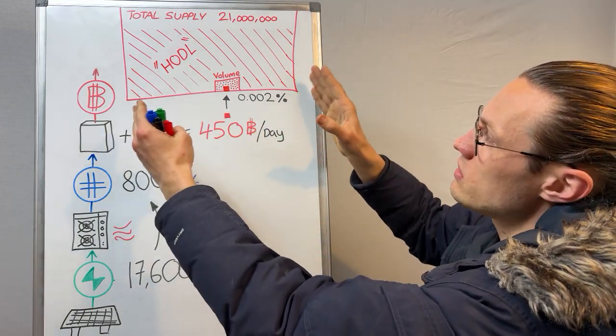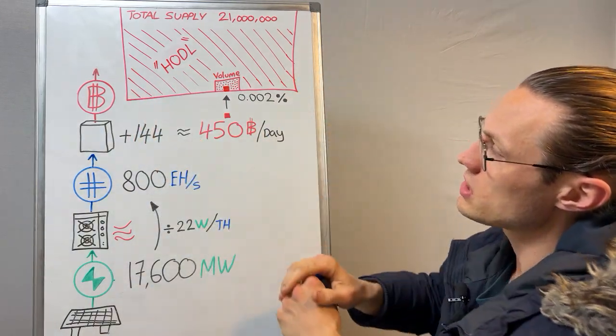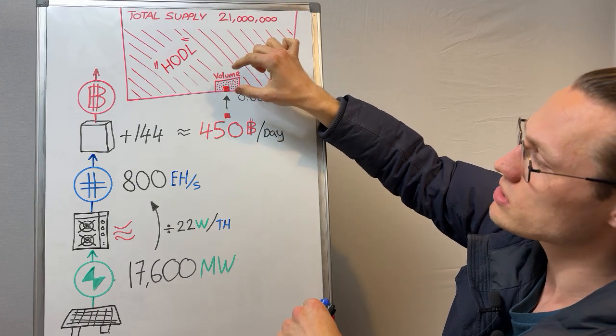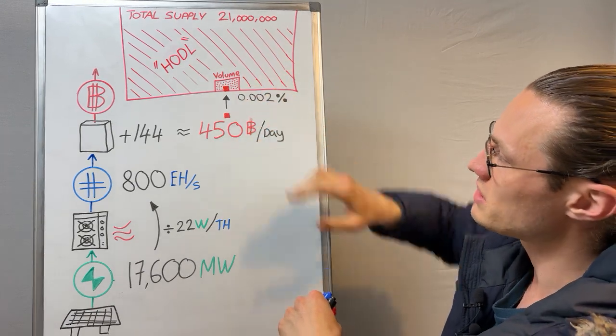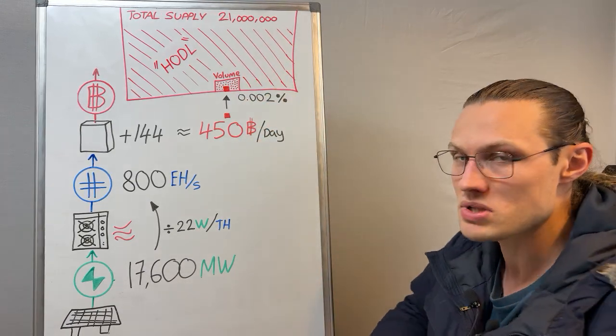That is the opportunity, because only a small amount is actually traded and the amount settled per day is 0.002 percent of the supply.